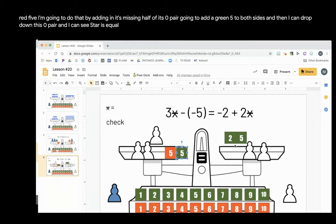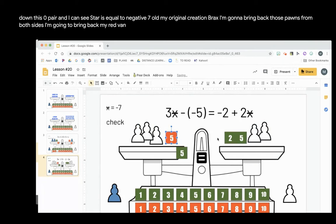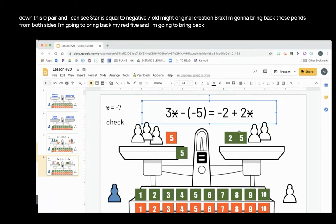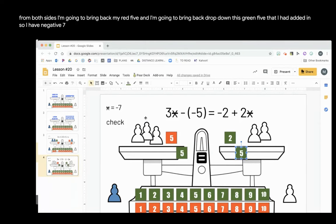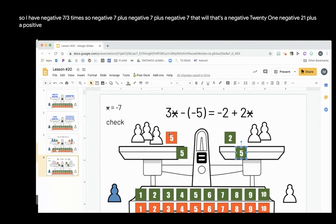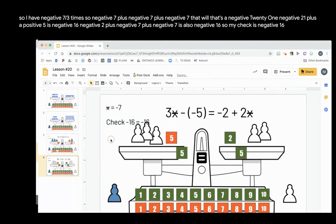And I can see star is equal to negative 7. I'll build my original equation back. I'm going to bring back those pawns from both sides. I'm going to bring back my red 5 and drop down this green 5 that I had added in. So I have negative 7 three times. Negative 7 plus negative 7 plus negative 7, that's negative 21. Negative 21 plus a positive 5 is negative 16. Negative 2 plus negative 7 plus negative 7 is also negative 16. So my check is negative 16 equals negative 16.